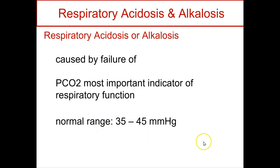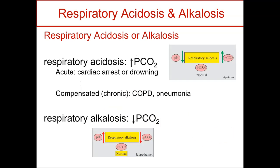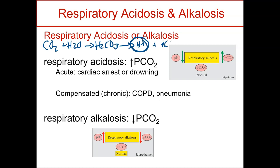The normal range of arterial blood CO2 is 35 to 45. If we have respiratory acidosis, that occurs because we have too much CO2 — we are retaining it. When CO2 is in our blood, it combines with water and forms carbonic acid, which then breaks down and produces hydrogen ions and some bicarb. When those hydrogens go up, that causes our pH to fall — this is respiratory acidosis.